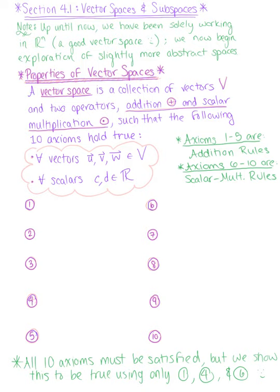To get us started, we want to think about the properties or the axioms of a vector space. A vector space is a collection of vectors V and two operators, addition and scalar multiplication, such that this set of vectors satisfies the following ten axioms. These axioms are for all vectors u, v, and w in the vector space V, and for all scalars c and d in R, the set of real numbers.